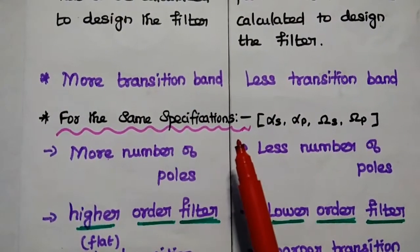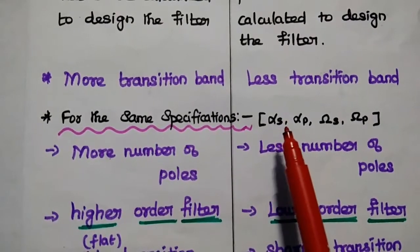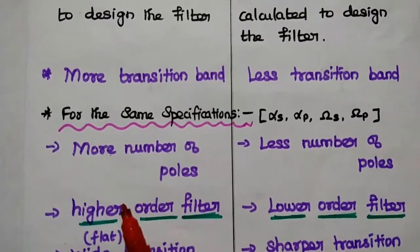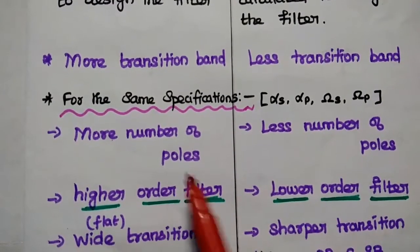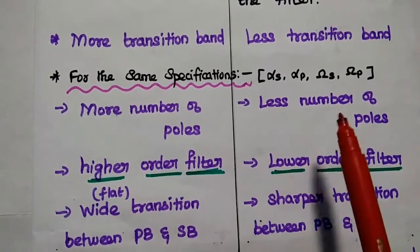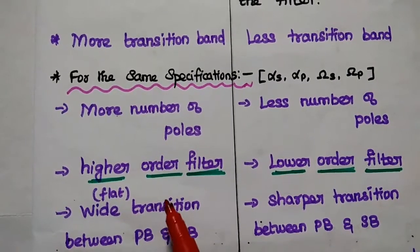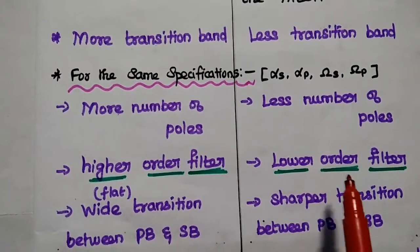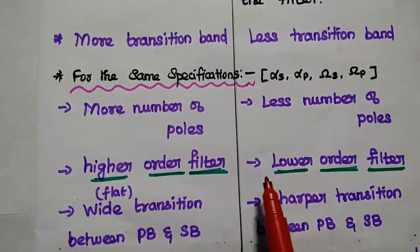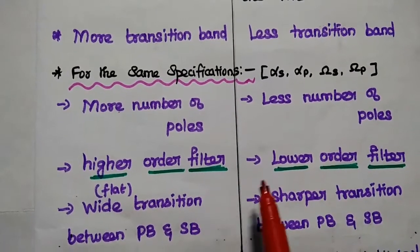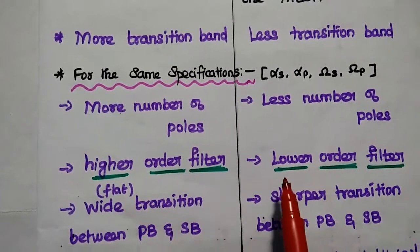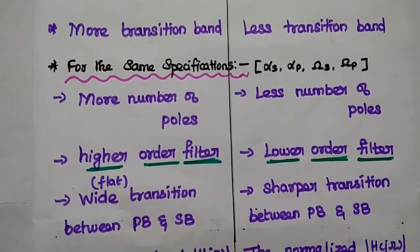For the same specifications — that is, the same values of α_s, α_p, ω_s, and ω_p — the Butterworth filter has more number of poles, while the Chebyshev filter has fewer poles. This means that for the same specifications, the Butterworth filter is a higher-order filter but the Chebyshev filter is a lower-order filter. This is a very important difference between the two.